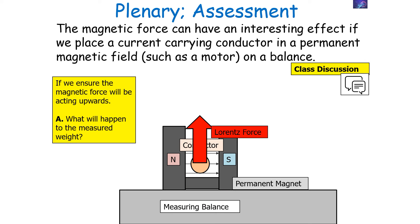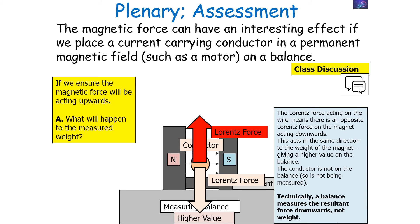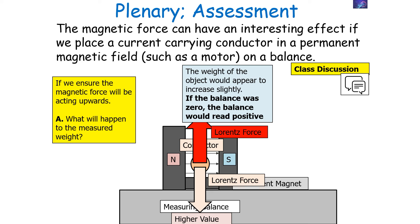What would happen if we placed a magnetic force on the conductor acting upwards? The magnetic force acting on the wire means there's an opposite magnetic force on the magnet acting downwards. This acts in the same direction as the weight of the permanent magnet. Since the conductor is not on the balance and it's the permanent magnet being measured, the balance measures the resultant force downwards — this increases that resultant force, so it would appear the weight increases slightly. If the balance was at zero, it would read a positive value.